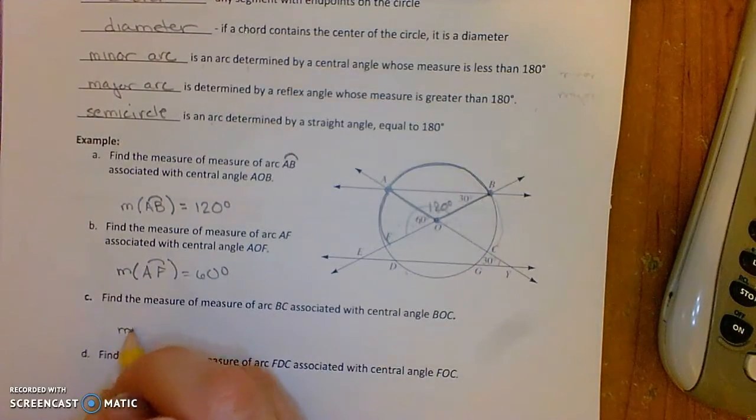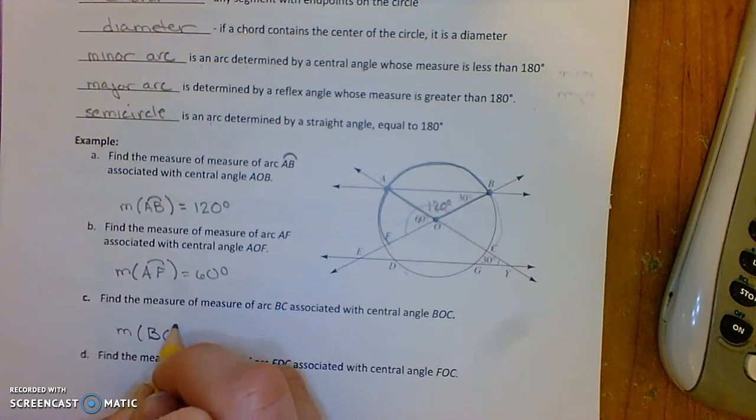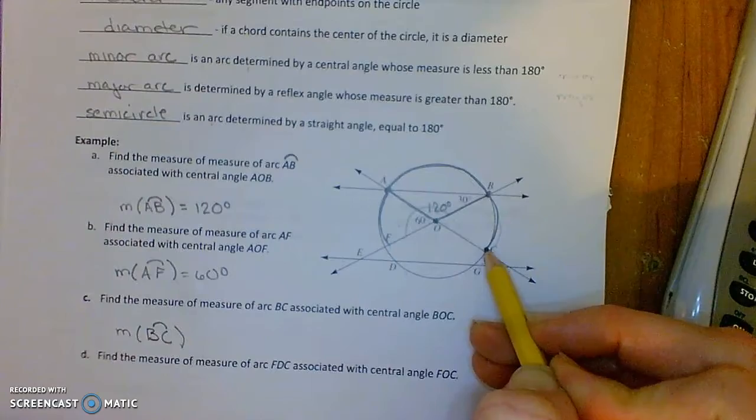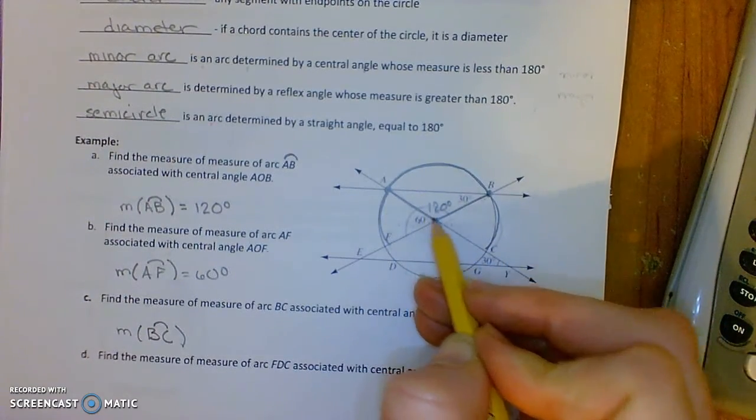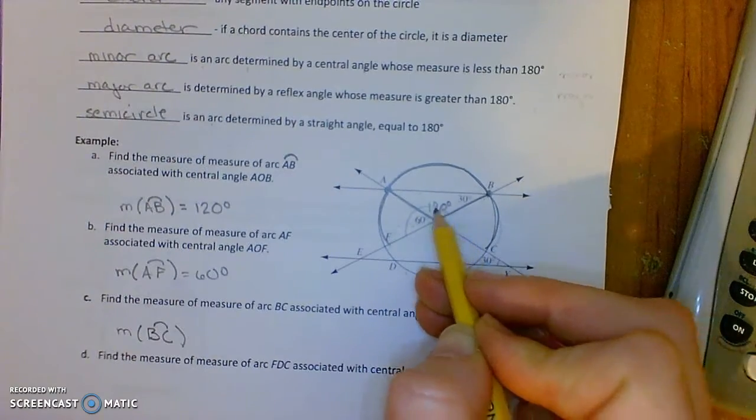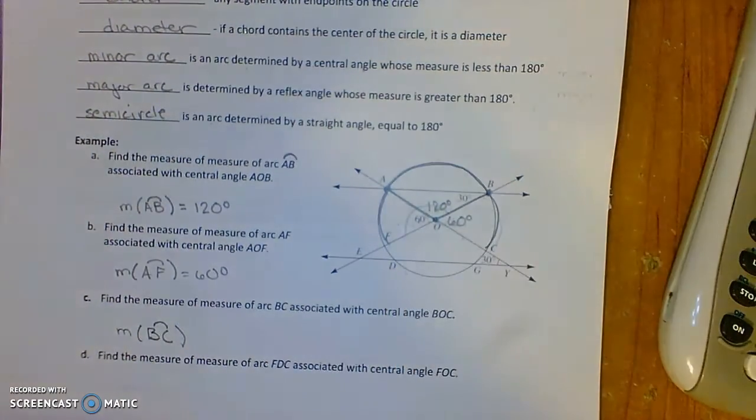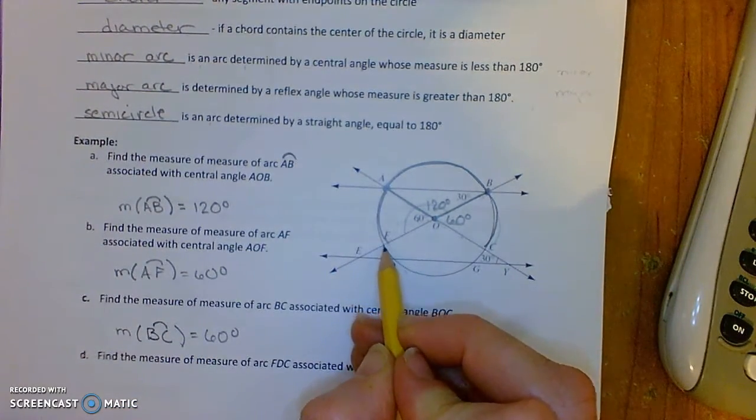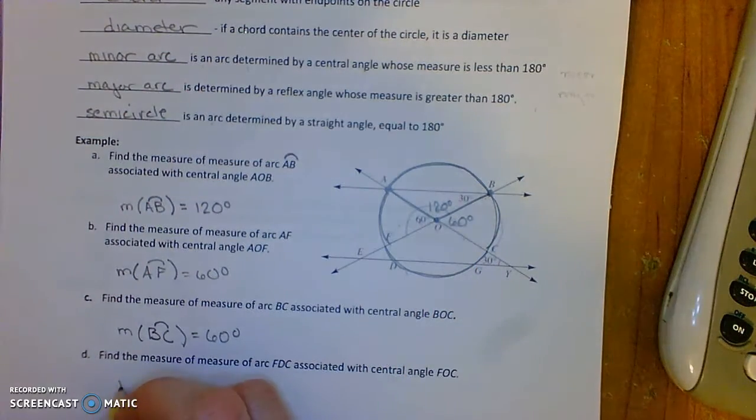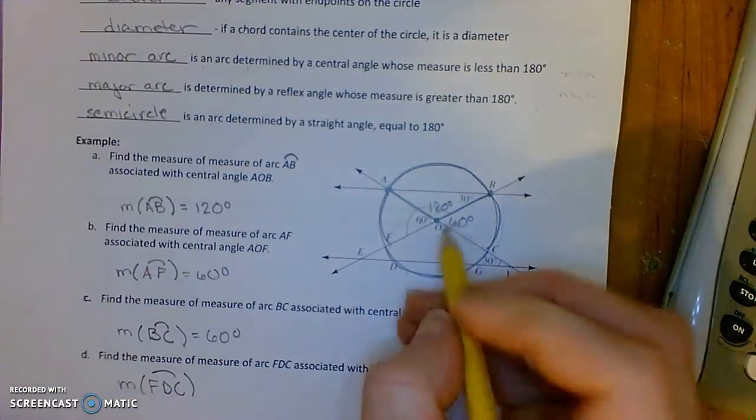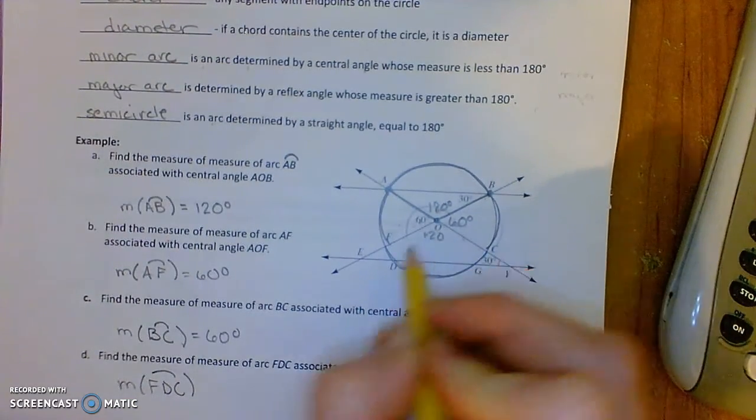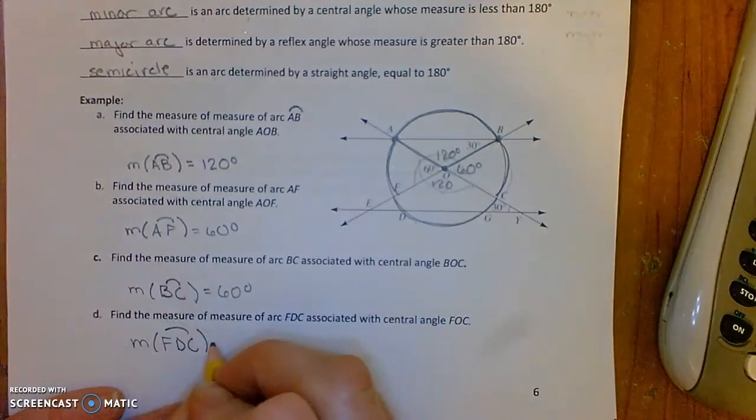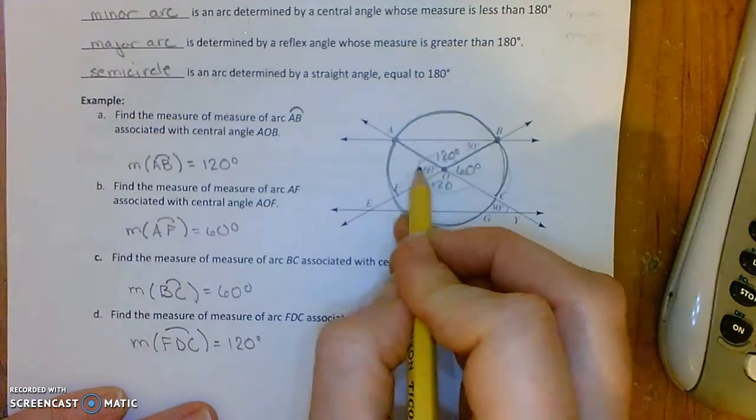And the measure of the arc BC associated with angle BOC here, that will also be 60 degrees because this is a straight line. So these two angles, which are adjacent, should add up to 180. So this should be a 60 degree angle there. So this one's 60 degrees. And the measure of arc FDC. Right there. Measure of FDC. This one should also be 120 because these two angles are adjacent. And add them together, you get a straight line. So if this one's 60, this one has to be 120.